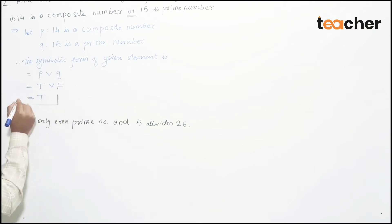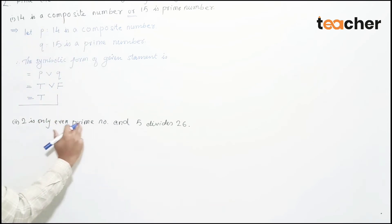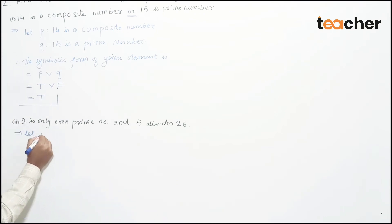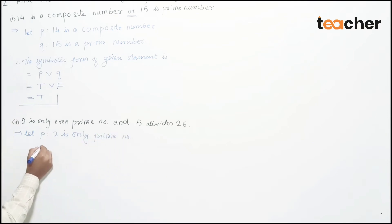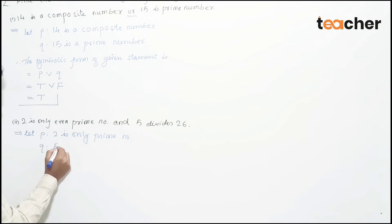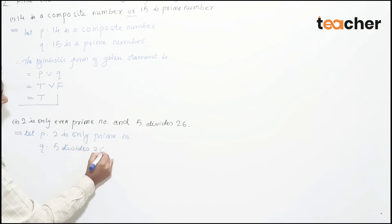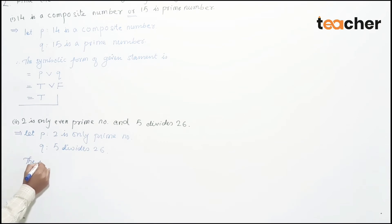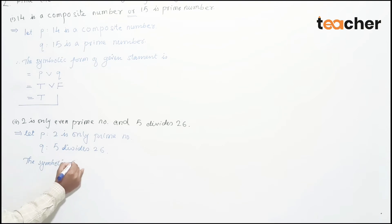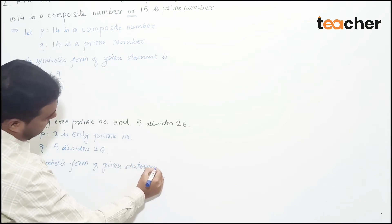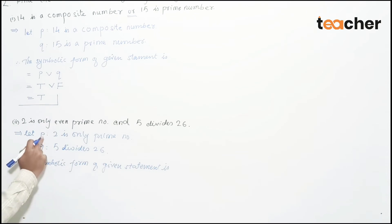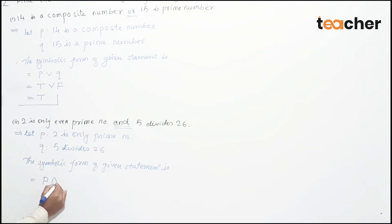Next compound statement: '2 is only even prime number and 5 divides 26.' Let P be '2 is only even prime number' and Q be '5 divides 26.' The symbolic form of the given statement is P ∧ Q — P conjunction Q. Now let's determine the truth values. 2 is only even prime number — yes, there is no even number other than 2 that is prime, so P is true.